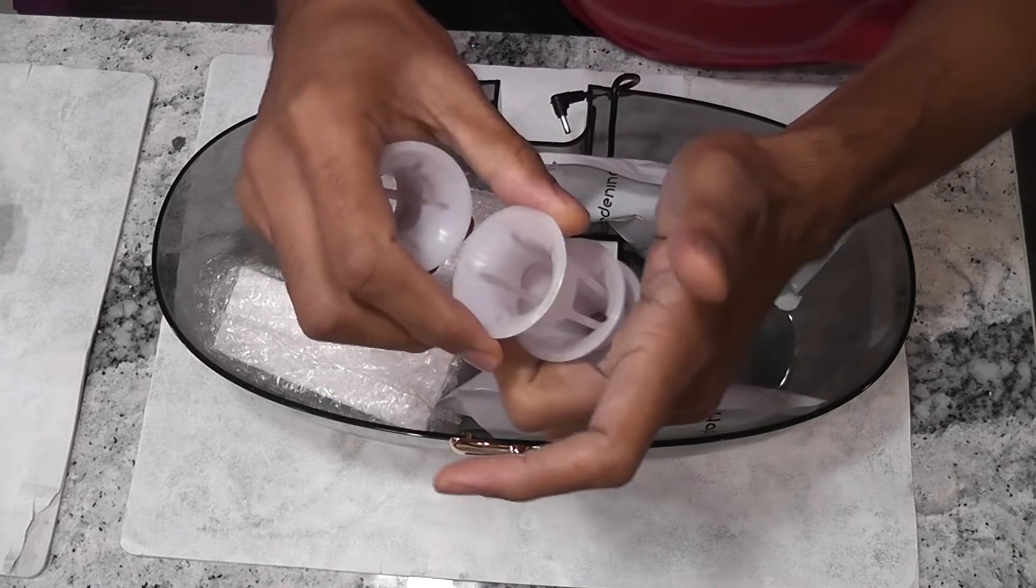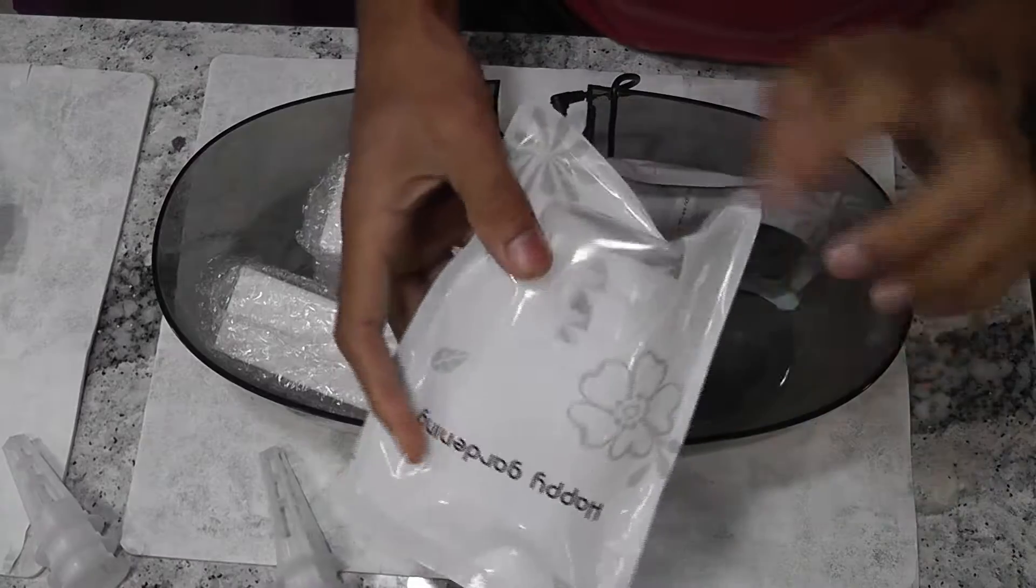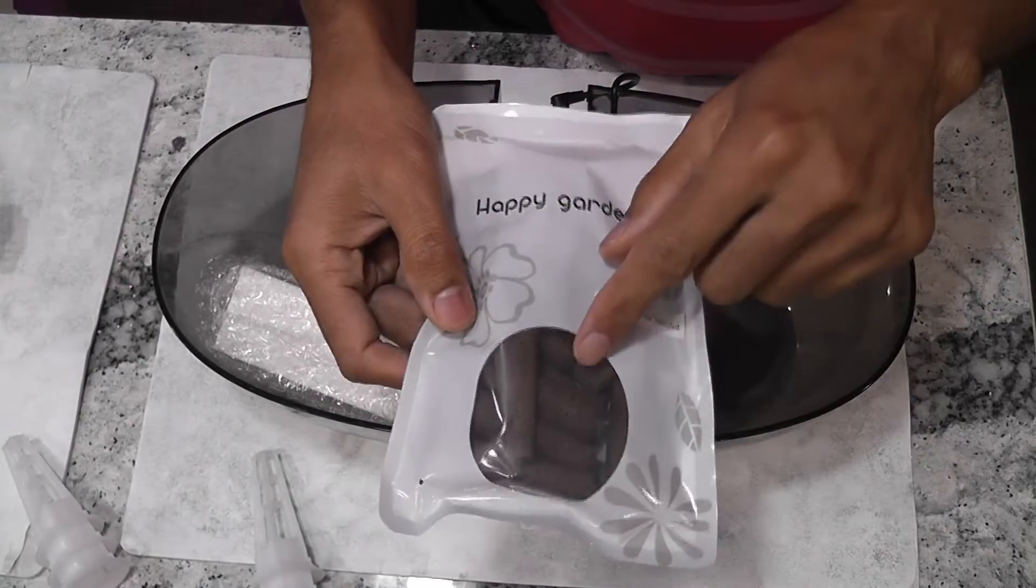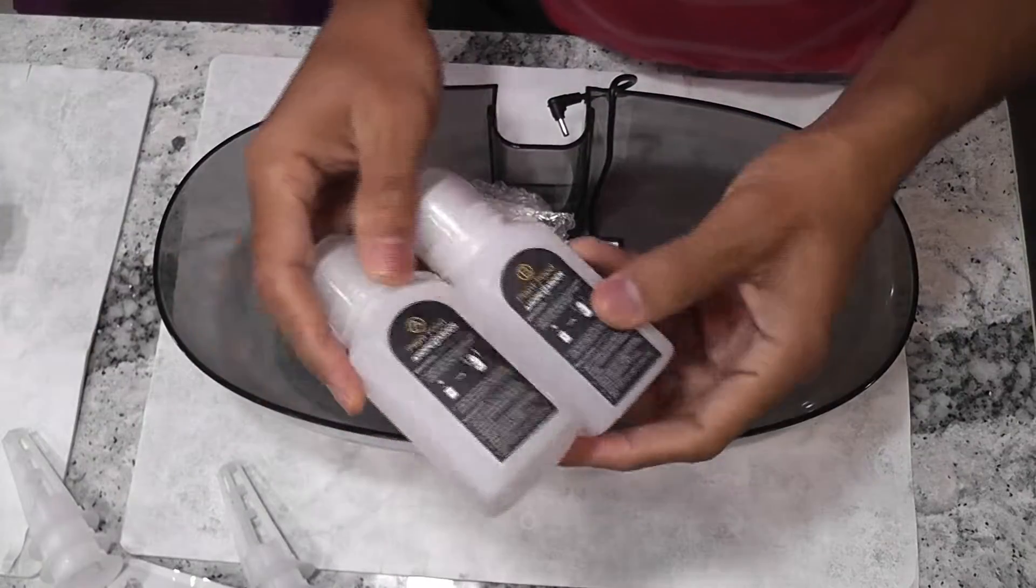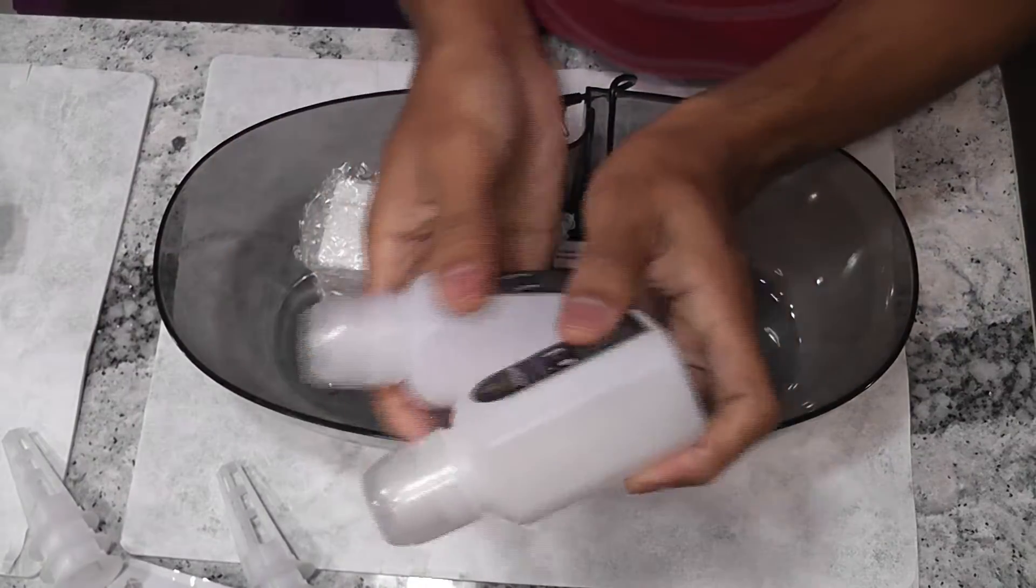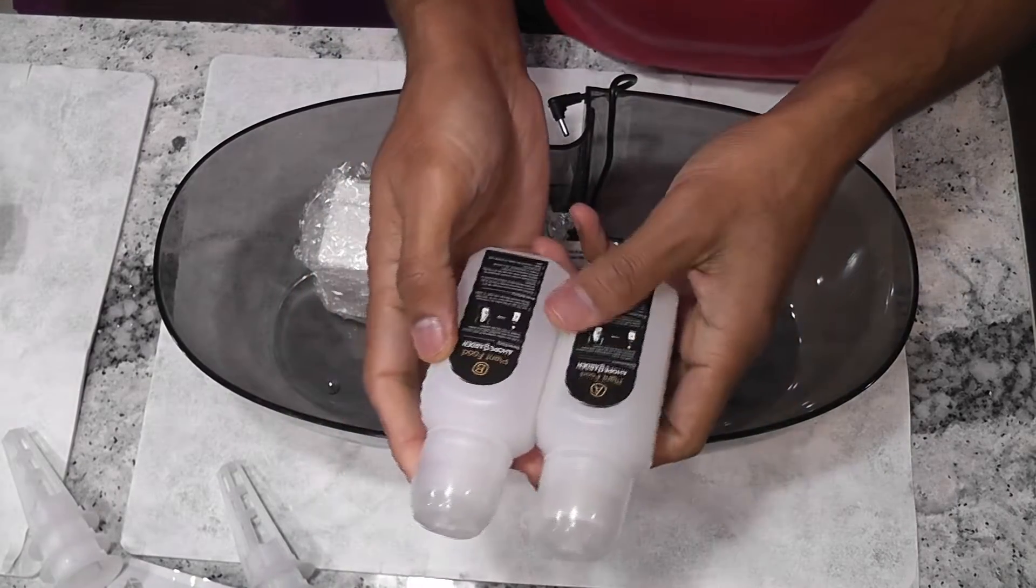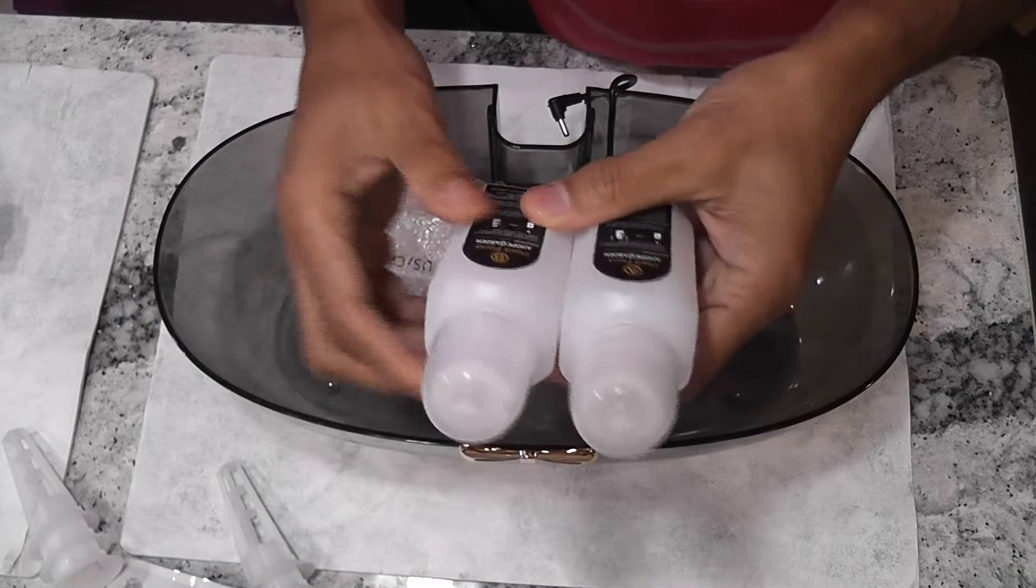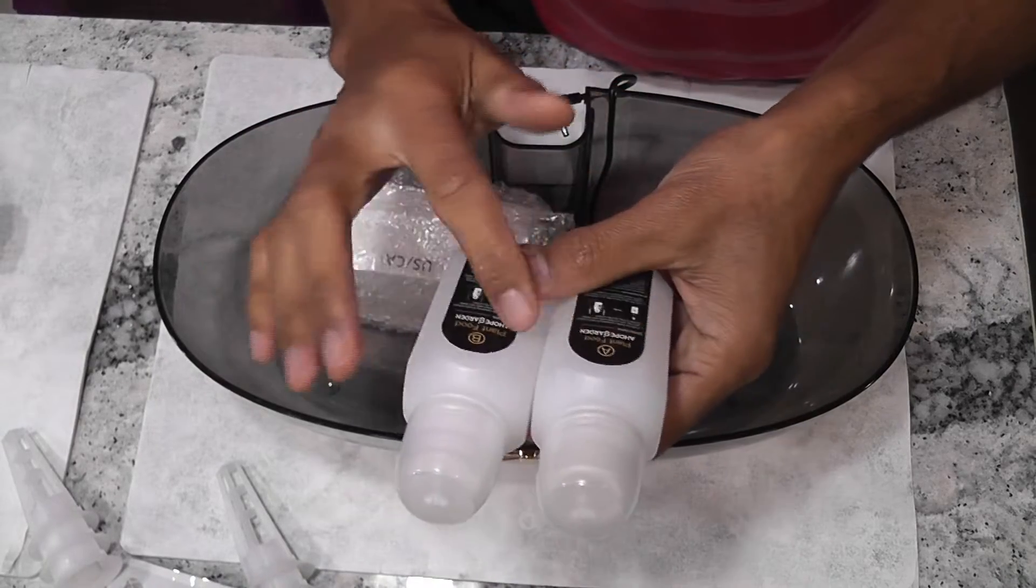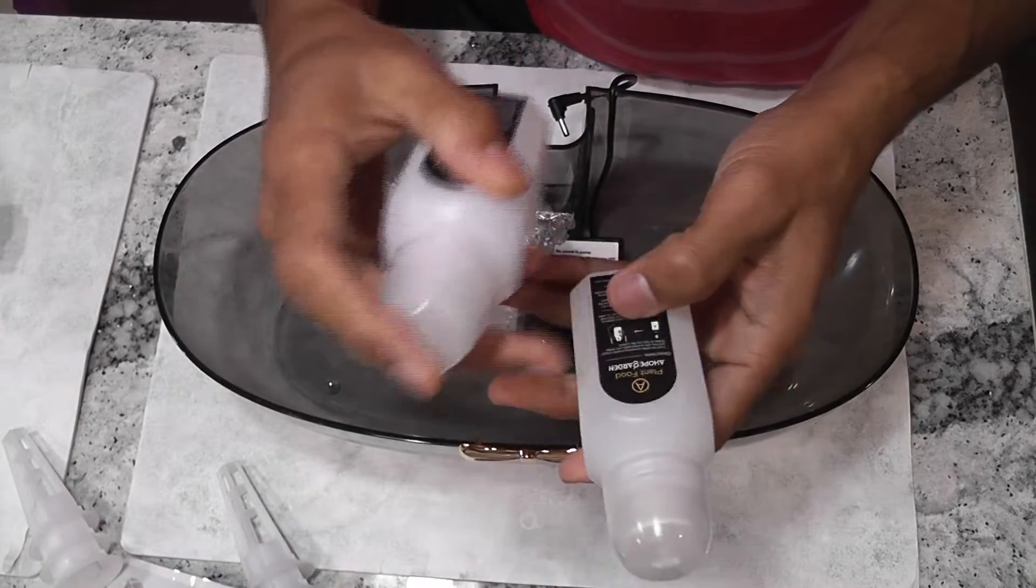Another pack of grow baskets and sponges. Then the plant nutrition, it is the same A B nutrition that comes with many hydroponic systems. These are dry nutrients, we need to add water to these bottles and shake well until all the solids are dissolved.